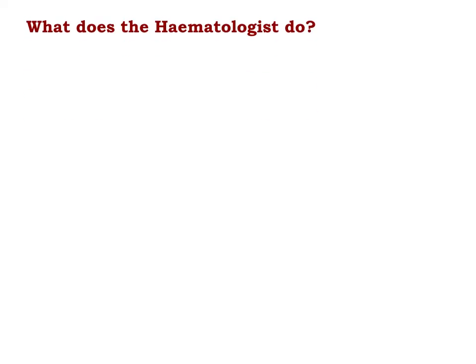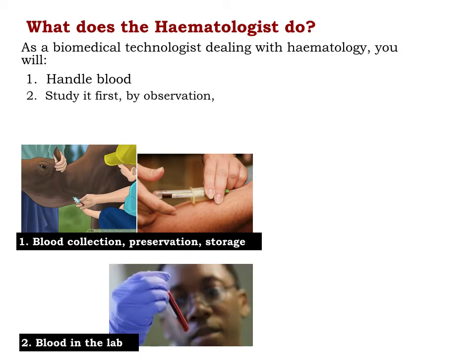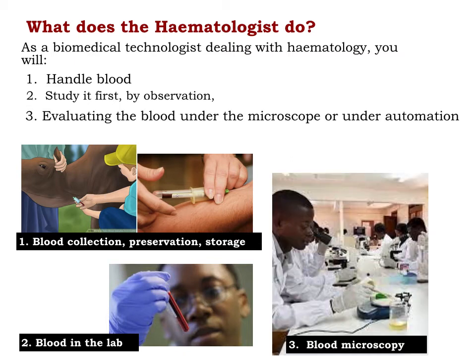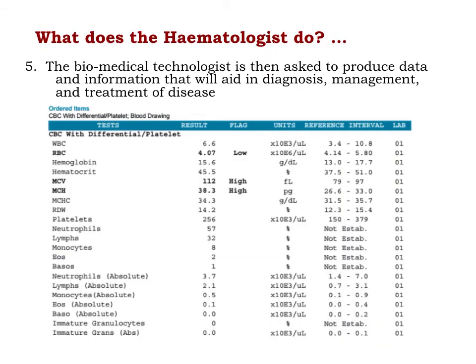What do hematologists do? As a biomedical technologist dealing in hematology, you'll first of all handle blood at the point of collection, whether in animals or human beings — preserve it, store it. Once in the lab, you may study the blood first by observation, then evaluate it under the microscope or using automated techniques and perform other supportive tests. You're going to produce the information or data that will aid in diagnosis, management, and treatment of disease.